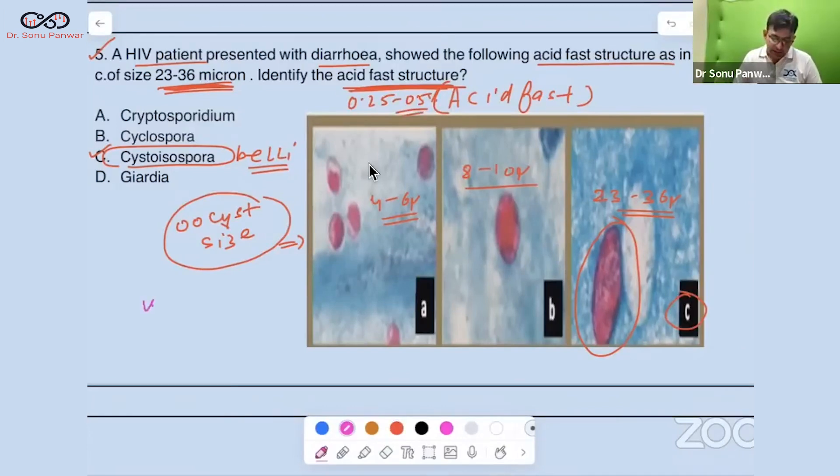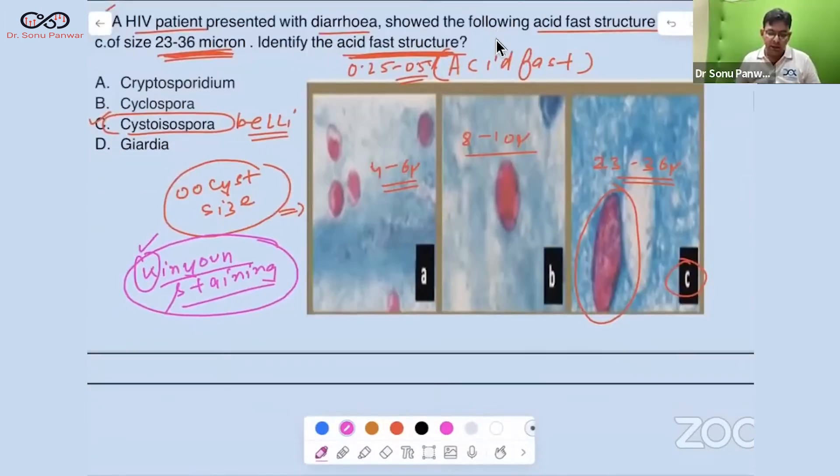We do for them Kinyon staining. And now you can tell me what is this Kinyon staining? Kinyon staining is cold method of acid fast staining. It is a cold method of acid fast staining.